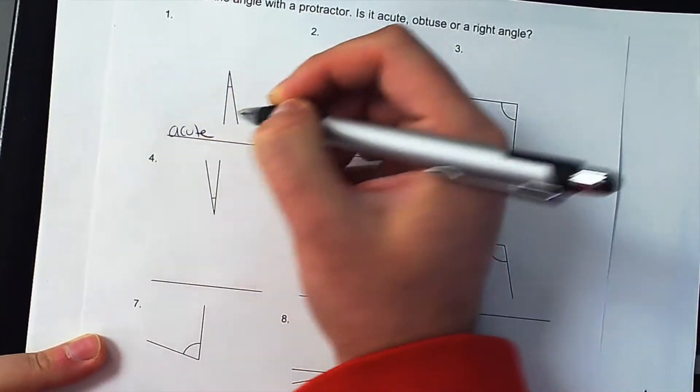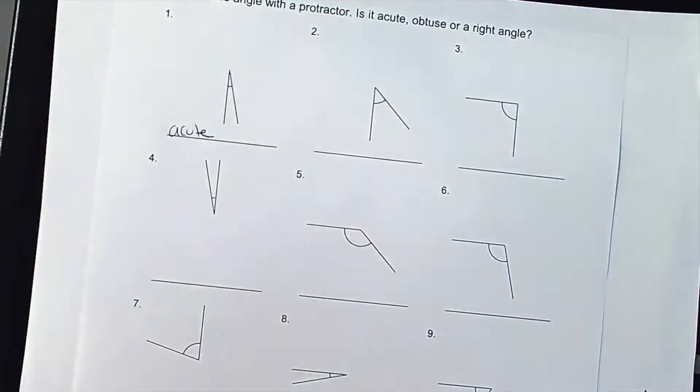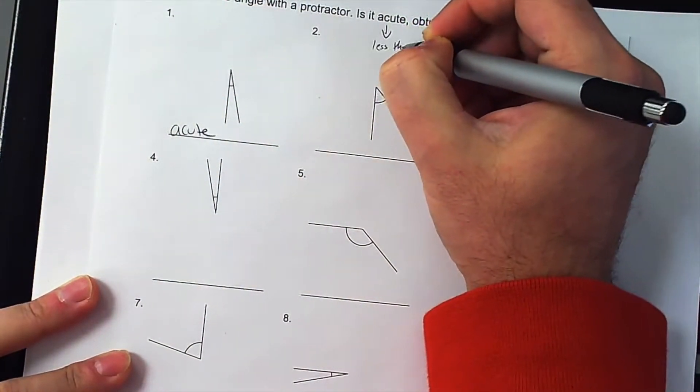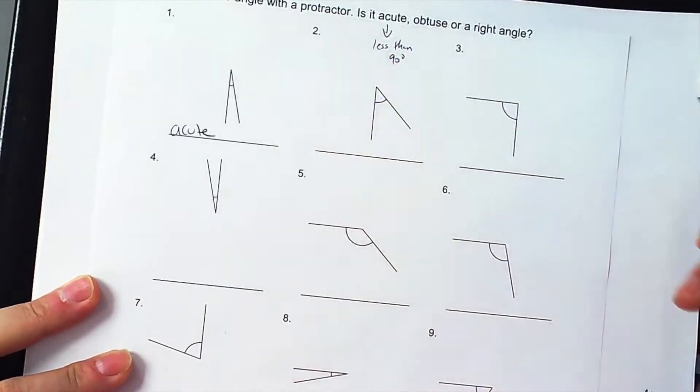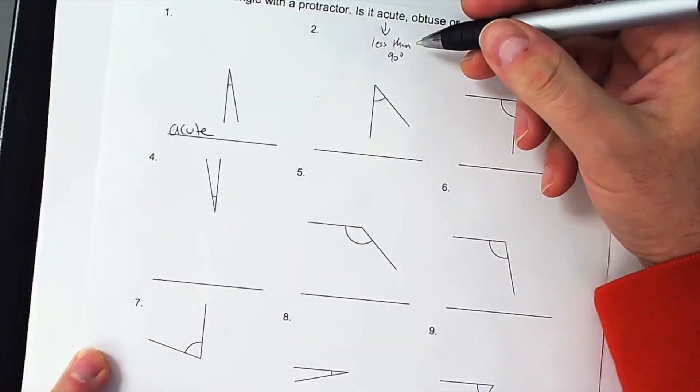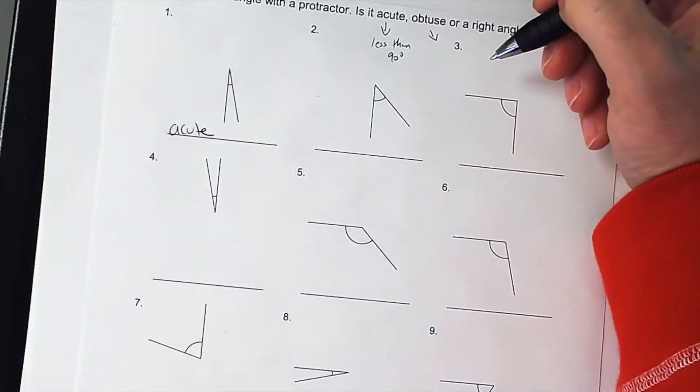What do you know about acute angles? Acute is less than 90 degrees. So if an acute angle is less than 90 degrees, what is an obtuse angle? More than 90 degrees.